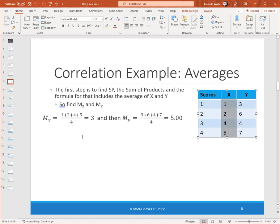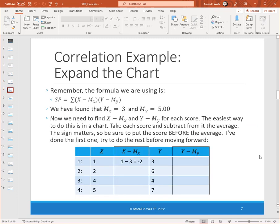We do the same thing for Y. We add three plus six plus four plus seven, that's twenty, twenty divided by four scores is five. So the mean of Y is five. Now, what I've done is I've expanded our chart a little, because as we go through, this chart will continue to increase to help guide us along these calculations.